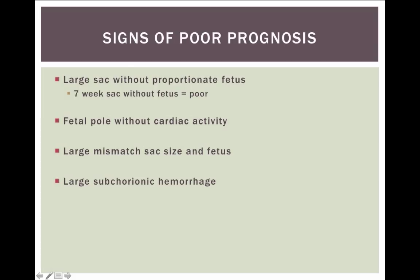If you see a sac that's seven or eight weeks or bigger and there's no fetus in there at all, that's a poor prognosis - not likely a normal pregnancy. Don't forget to think about ectopic. If you see a pregnancy that's progressed to having a fetal pole with no cardiac activity, that's a really poor prognosis and likely fetal demise - patients should be counseled. A huge mismatch in the size of the sac and the fetus is also poor prognosis. You'll find a sac measuring around 11 weeks but the fetal pole measures six weeks with no cardiac activity. When you see a very large subchorionic hemorrhage, likely poor prognosis, but be careful about how you counsel patients on that.